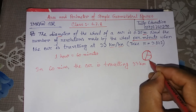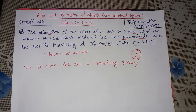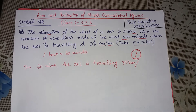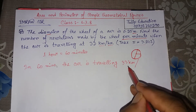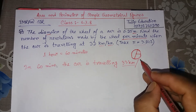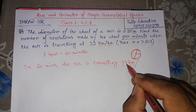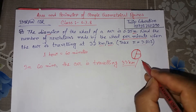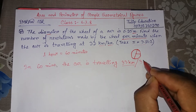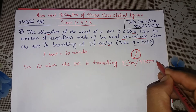We know that one kilometer equals 1000 meters, so we have to convert this into meters. We multiply 1000 by 33 and we get 33,000 meters. So in 60 minutes the car travels 33,000 meters.